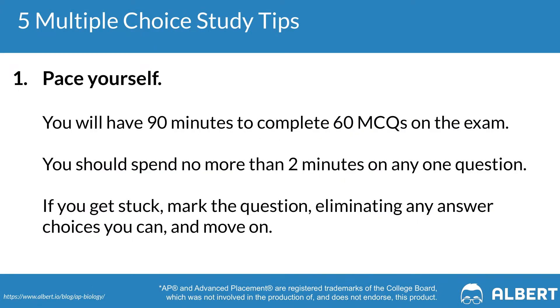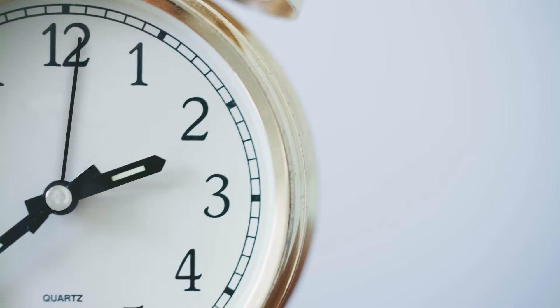The first tip when it comes to crushing the multiple choice section is to make sure that you are pacing yourself well. You're going to have about 90 minutes to answer 60 multiple choice questions — that translates to about 90 seconds or a minute and a half per question. Build the habit of reading each question twice to truly understand what's being asked, then work your way through a response. If you're struggling, circle that question and come back to it later rather than getting stuck on one particular question.